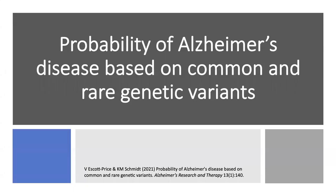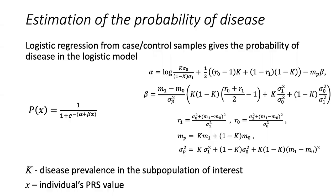What I wanted to talk about today is the probability of Alzheimer's disease based on common and rare genetic variants together. We have just got a paper accepted in the Journal of Alzheimer's Research and Therapy — if you're interested you can look at that. Because I was working with a mathematician, and I'm a mathematician myself, don't be concerned by the bulky formulas — they are all explained in the paper. We calculate disease probability using linear regression with a logistic function. Alpha and beta are the important parameters: x is the value of an individual's polygenic risk score, and alpha and beta are estimated from parameters we actually know.